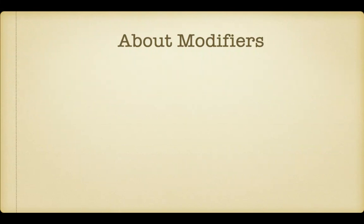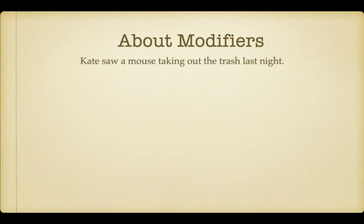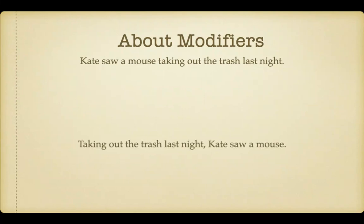The purpose of modifiers is to add extra meaning or to clarify sentences. Using a modifier incorrectly, however, will result in a sentence that is unclear and confusing. Think about this example: 'Kate saw a mouse taking out the trash last night,' versus 'Taking out the trash last night, Kate saw a mouse.'